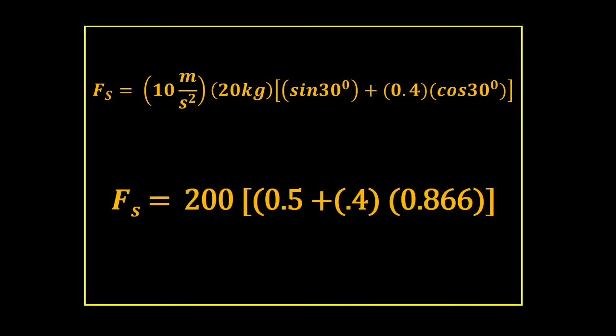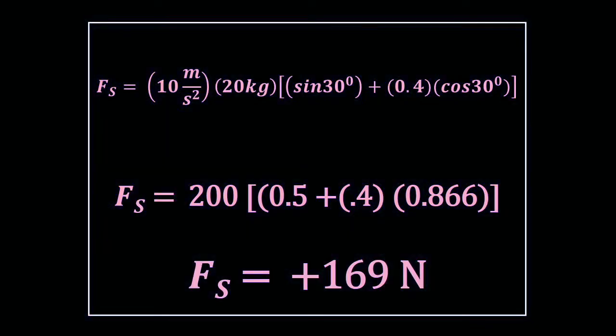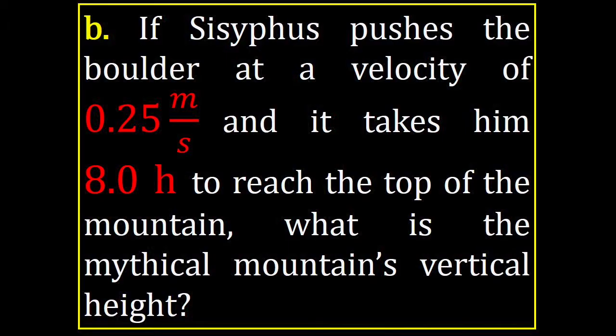0.4, cosine 30, etc., 10, 20, and then I'm reducing it a little bit further, make sure that you can do this, and then it's going to be Fnet is 169, so 169 newtons.